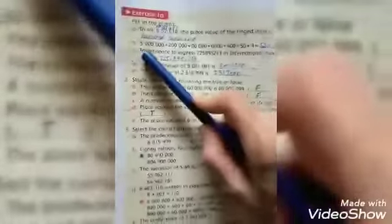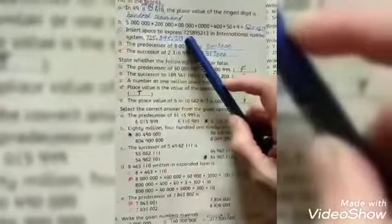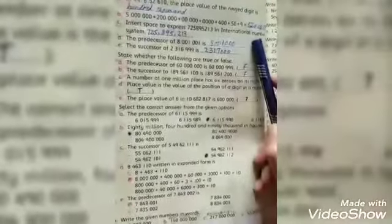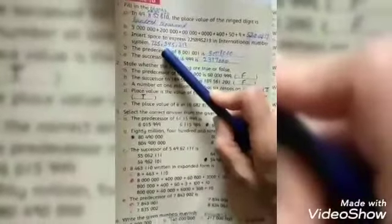C part is insert the space to express 725895213 in international number system. In international number system, we have to remember that every three digits will have a comma.